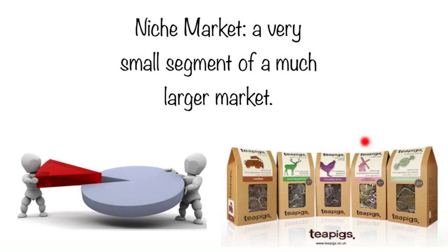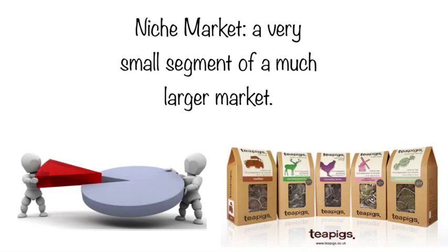Teapigs is a great example of a niche market product. In 2014, the UK tea market was worth £591.8 million, and the herbal tea segment accounted for about 16.12% of that. Mass market players such as Unilever, Tetley, and Twinings still dominate the herbal tea market. Therefore Teapigs identified a niche within that market, focusing on sourcing organic and unique herbs to create their blends and promoting them based on their health benefits.